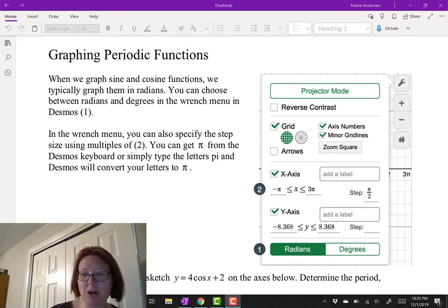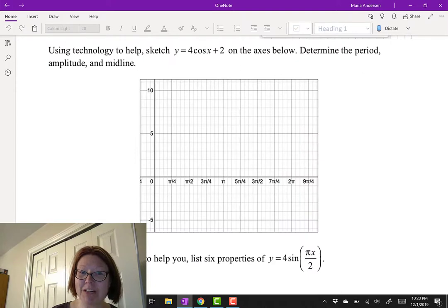Let's go ahead and give this a try. Using technology we're going to sketch y equals 4 cosine x plus 2. Now the plus 2 is not inside the cosine, it's outside the cosine. So it's 4 cosine of x and then plus 2 to the right.